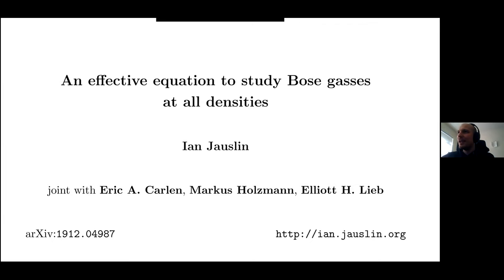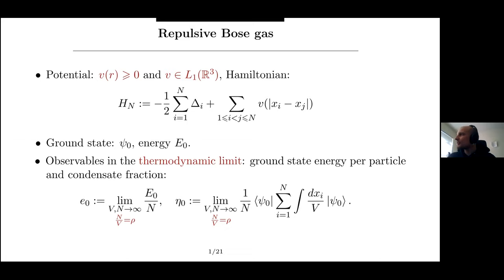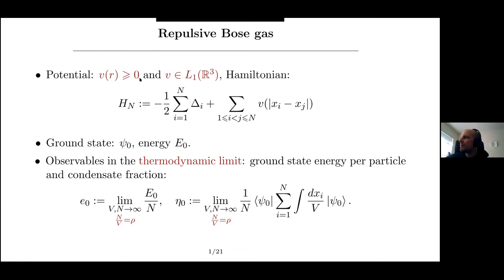So without further ado, let's get into it. What I'll be talking about today is an interacting Bose gas, and in this first slide I'll essentially be laying down some notation. This should be familiar to most of you. I'll be talking about a many-body Bose gas with a repulsive interaction, so the Hamiltonian I'll be considering has a pair potential which is rotationally symmetric — it only depends on the distance between particles.